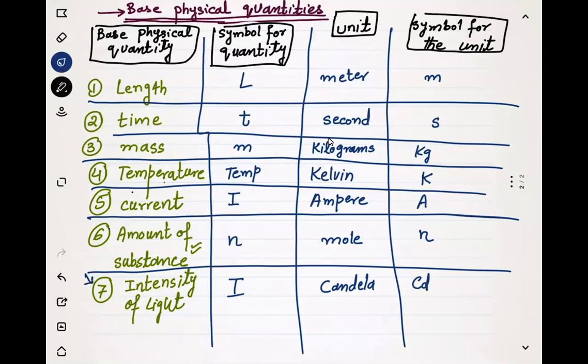Why are these quantities called base quantities? All the quantities in physics can be constructed using these seven quantities. I would say they are the alphabets or ingredients of the whole physics — there is not a single quantity in physics that cannot be constructed from these seven. So we can use these seven quantities to describe all of physics, and every single quantity can be broken down into these base quantities. The next two classes will be about the derivation of base units of other quantities.